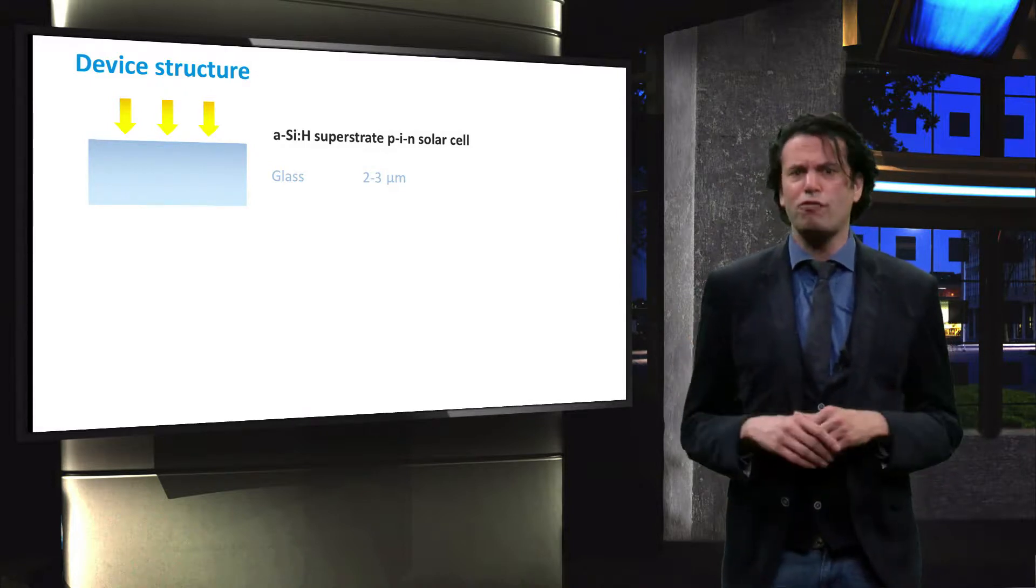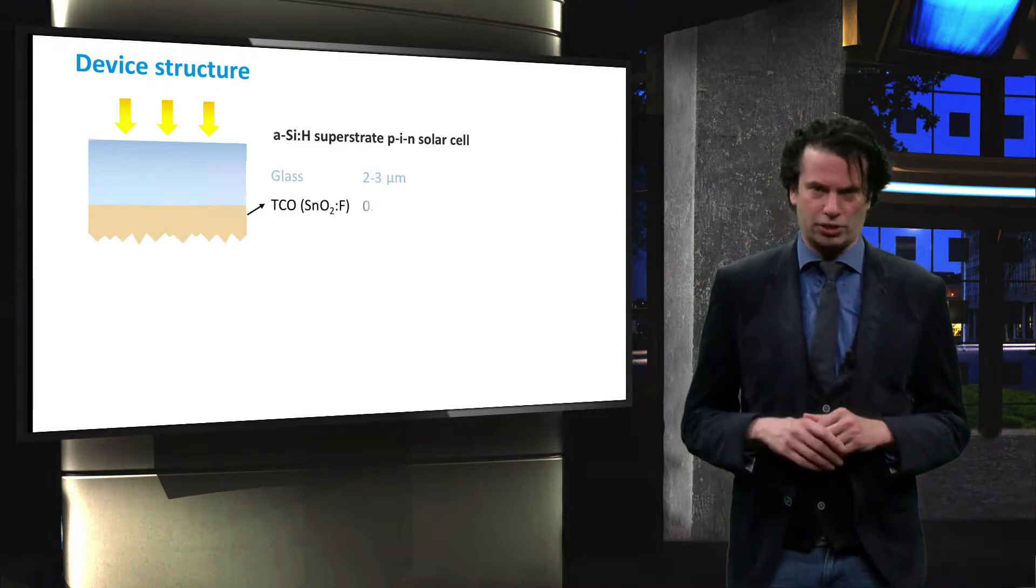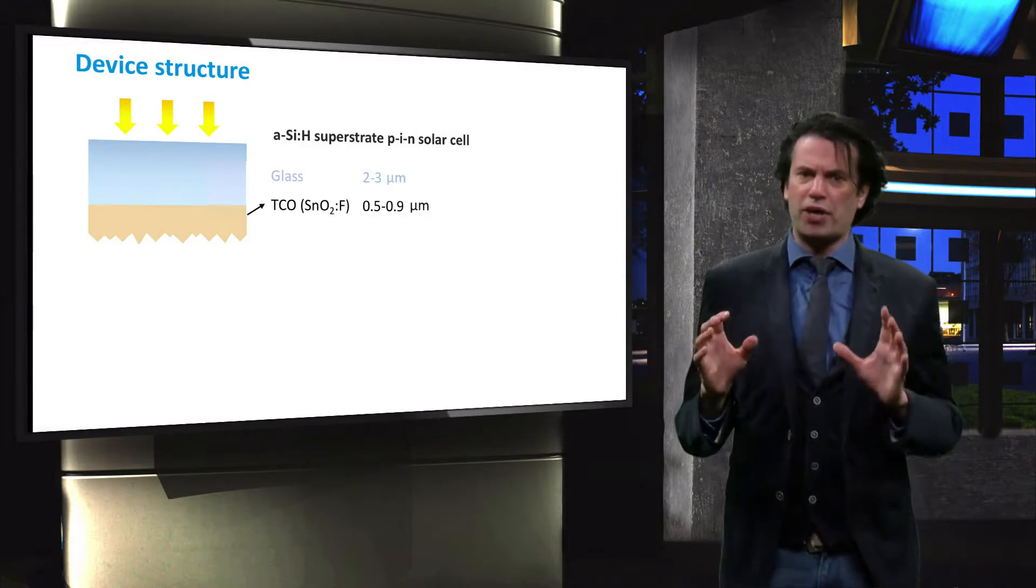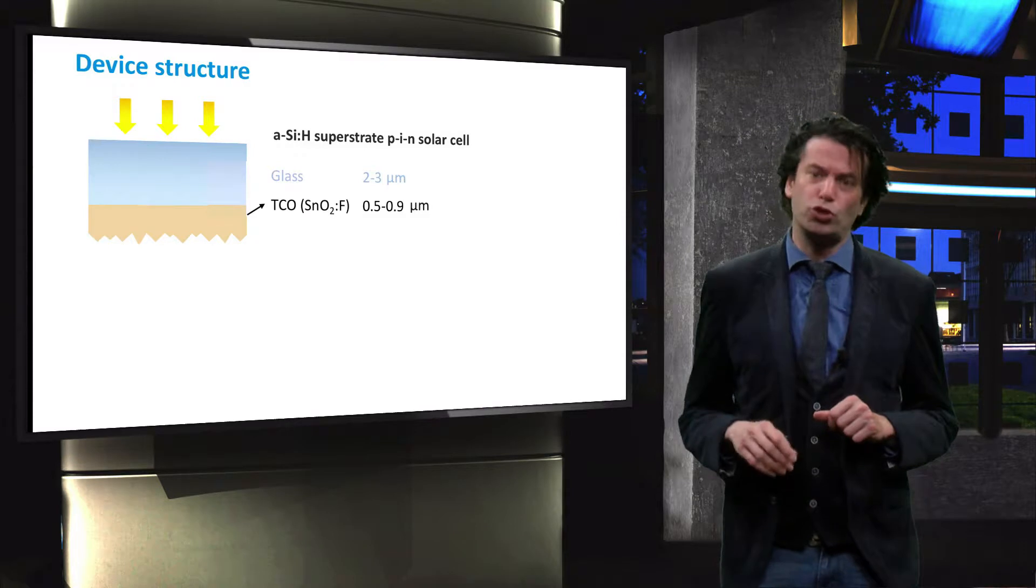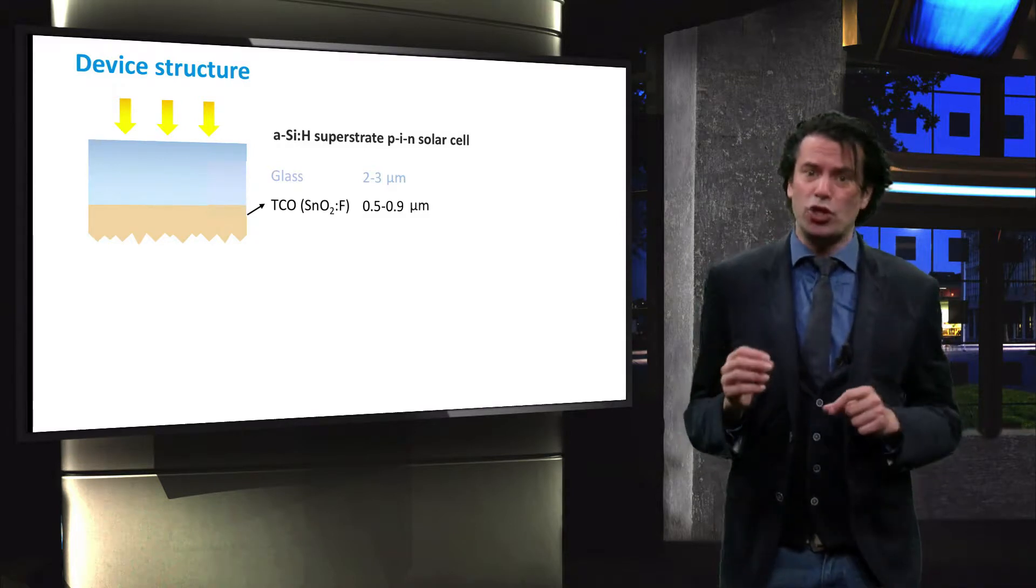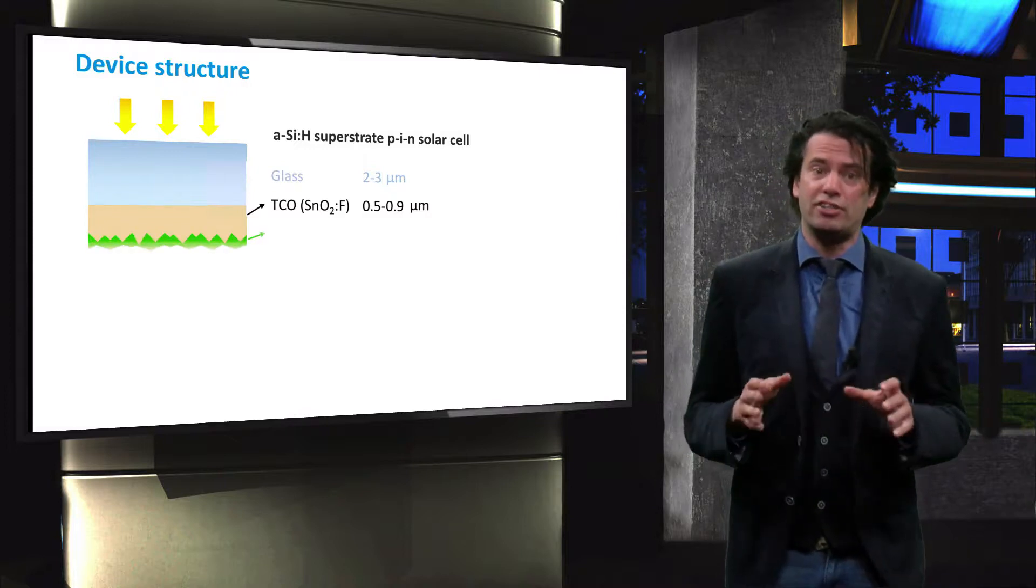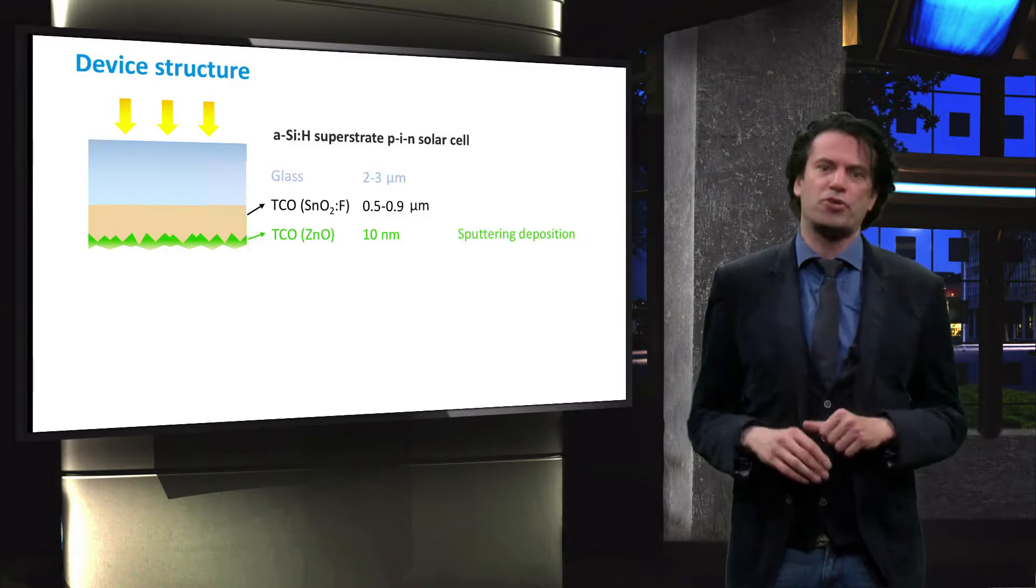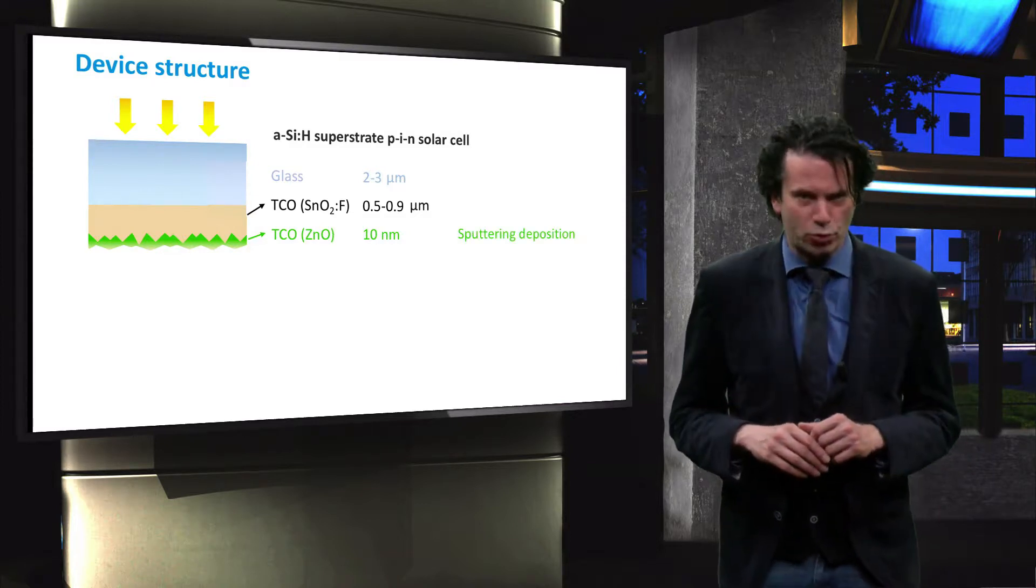In our group often substrates are used that already have a TCO coating on top of the glass. This is a fluorine doped tin oxide coating of about 0.5 to 0.9 micrometers. The substrate is cleaned in an ultrasonic bath before a very thin TCO layer is deposited onto the substrate to protect the fluorine doped tin oxide from the subsequent plasma processes.